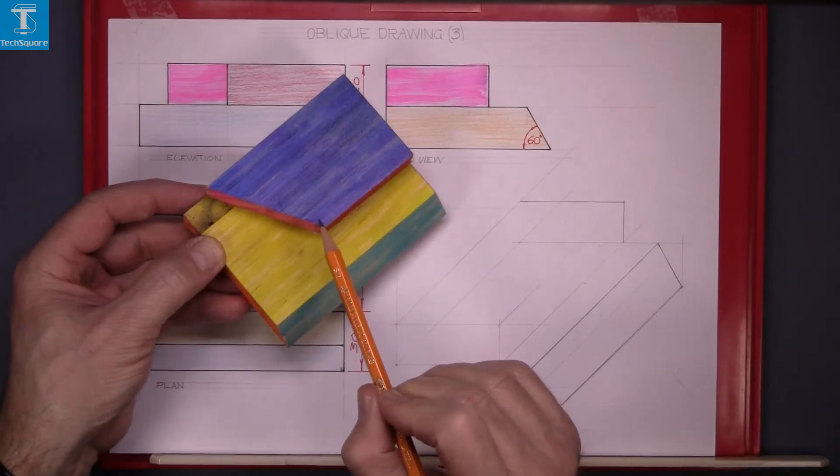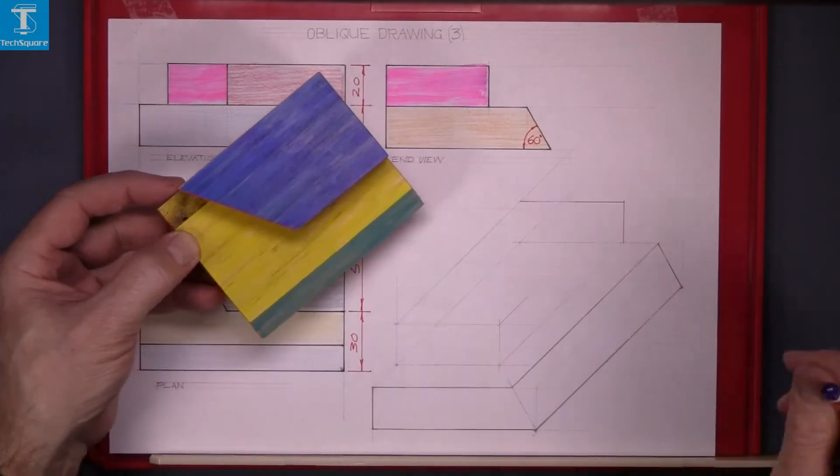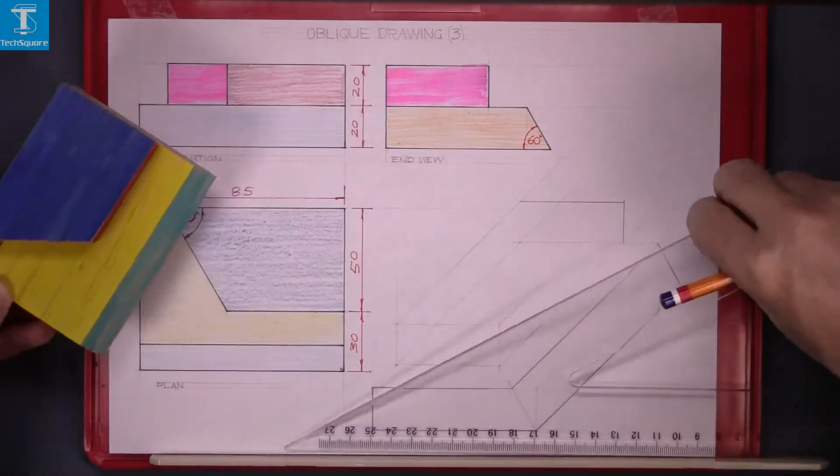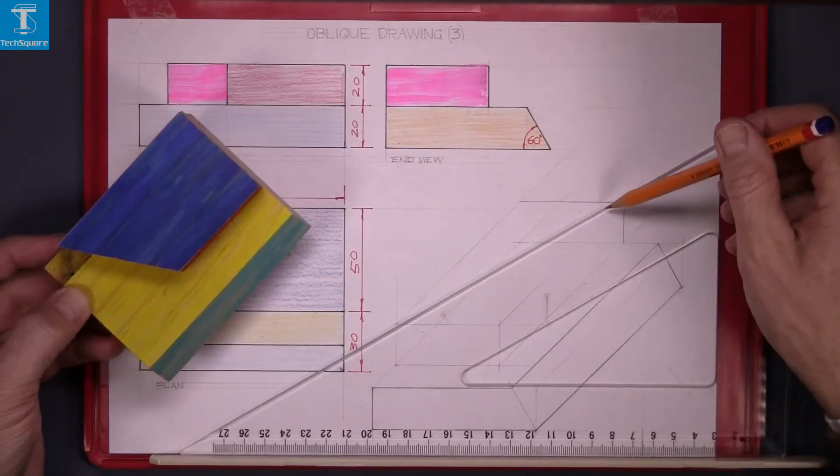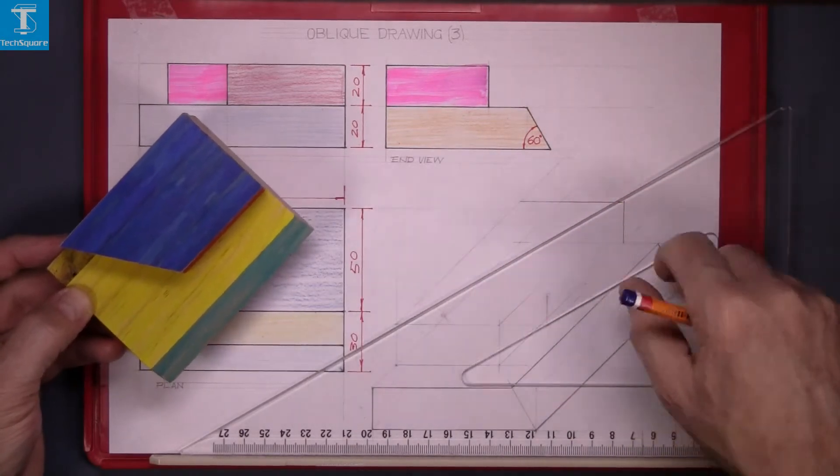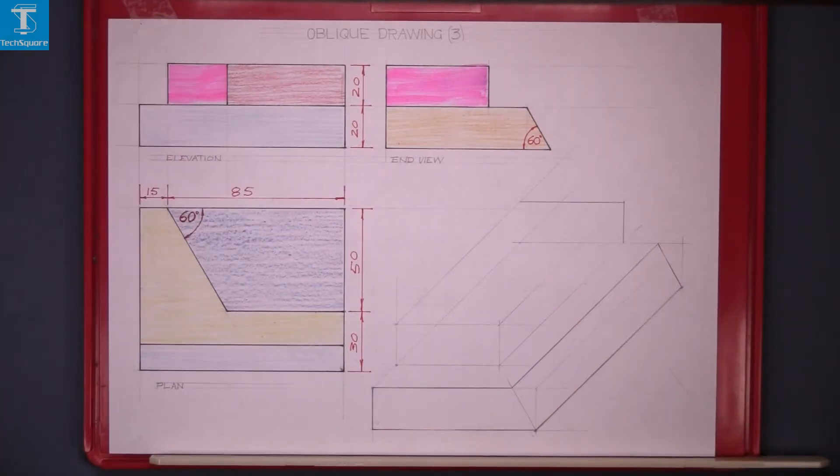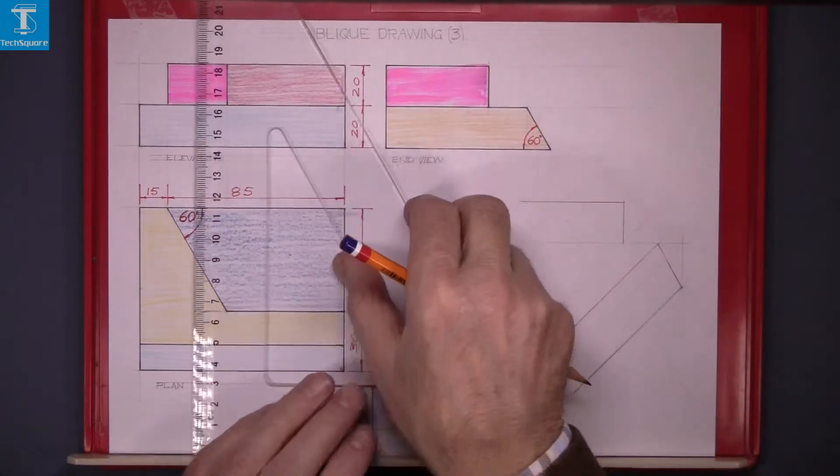This angle here is cut at 60 degrees. So if we put the set square on here you'll see that we cannot use this like this. We cannot draw that line with the 60 degrees. You have to set it off in distances.